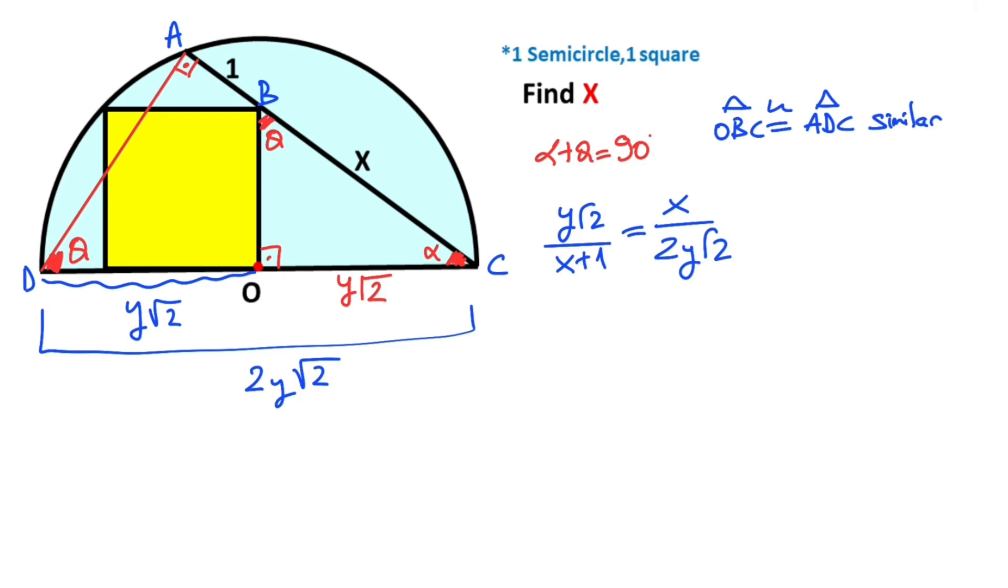So after the cross multiplication, y√2 times 2y√2 equals x times (x+1). So 4y² = x² + x.